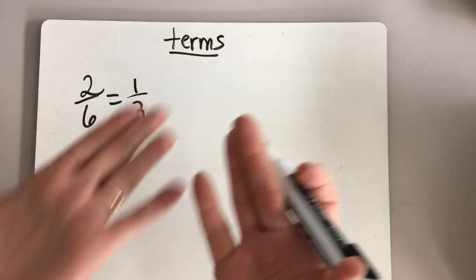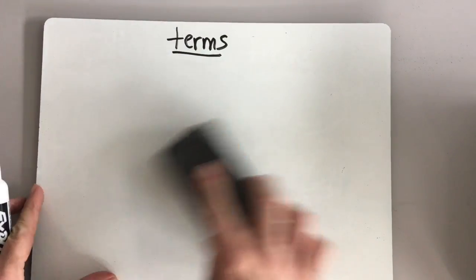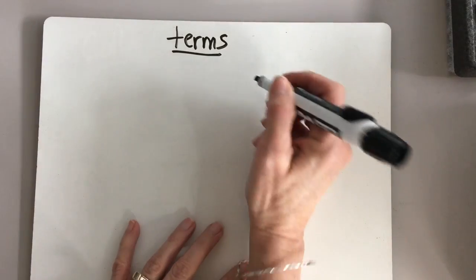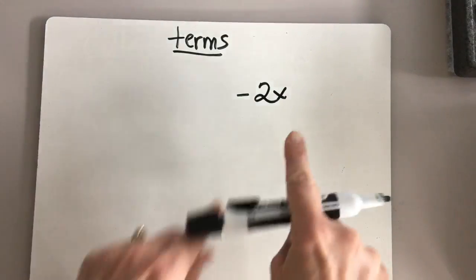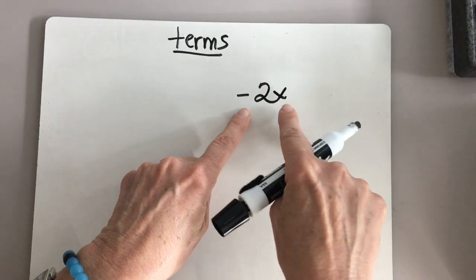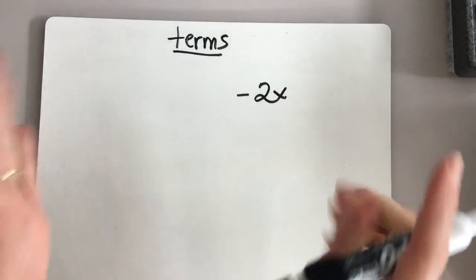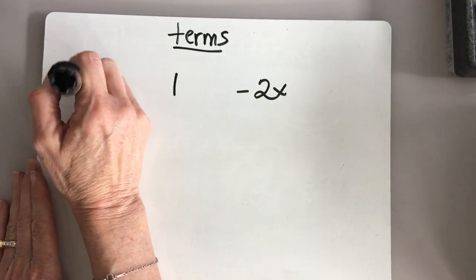So you've heard that word before — terms. Well, now we're going to use it in algebra and algebraic expressions. Here's a real easy example. Let's say we had negative 2x. This would be just one term. Even though we have a number and we have a variable, this is considered one term. And we would call it a monomial.